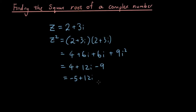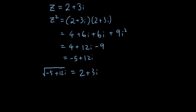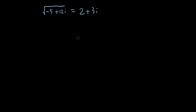Now what does the square root mean? Well, the square root just means the opposite of squaring it. So if I square root negative 5 plus 12i, I should get 2 plus 3i. The question is, how would you find that? How would you know that is 2 plus 3i? If we had no idea what it was, how would we find it? That's what this tutorial is about — finding the square root of a complex number.